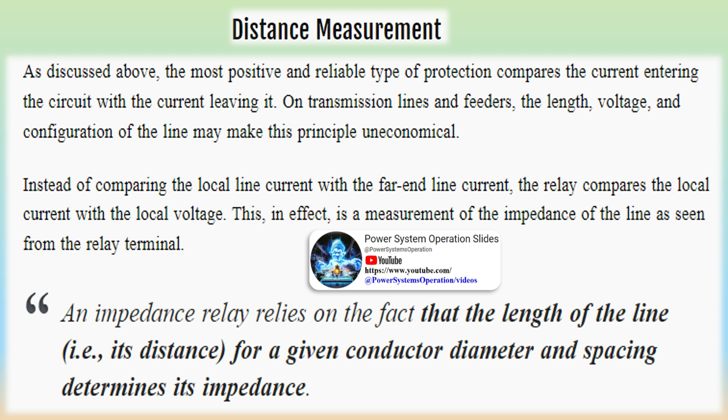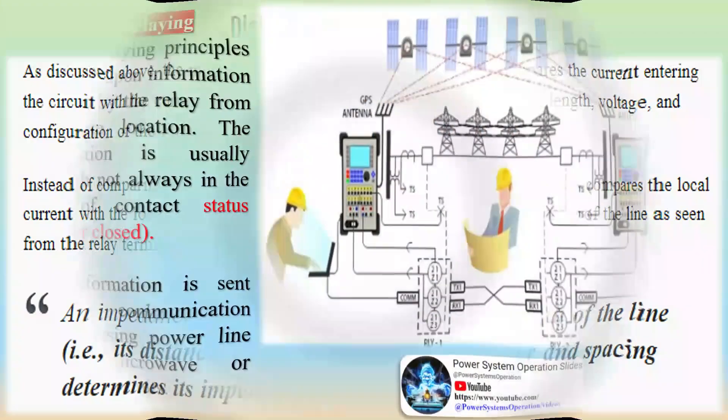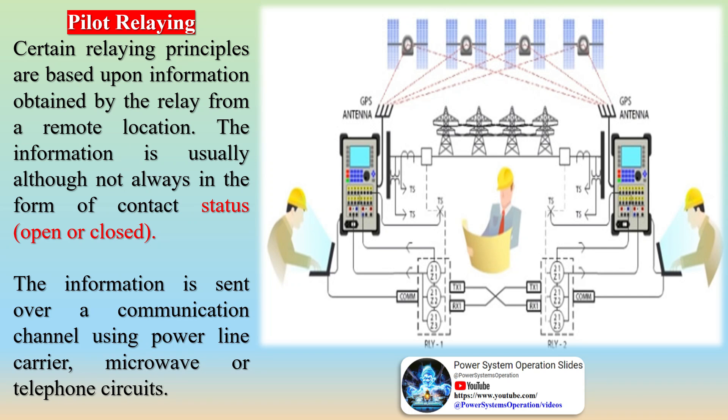Instead of comparing the local line current with the far end line current, the relay compares the local current with the local voltage. This, in effect, is a measurement of the impedance of the line as seen from the relay terminal. An impedance relay relies on the fact that the length of the line, i.e. its distance, for a given conductor diameter and spacing determines its impedance.